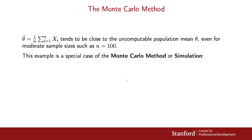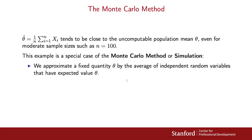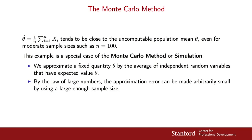This is a simple example of the Monte Carlo method, sometimes simply called simulation. What that method does is it approximates a fixed quantity theta by the average of independent random variables that have expected value equal to theta. Then, by the law of large numbers, the approximation error can be made as small as you wish by using a large enough sample size.